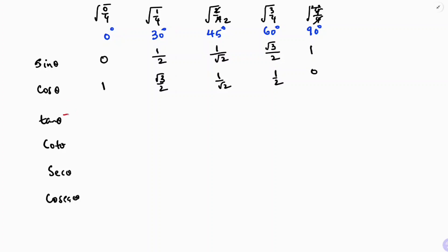Tan is sine divided by cos. So: 0 by 1 is 0; (1/2) divided by (root 3/2) gives 1 by root 3; (1/root 2) divided by (1/root 2) gives 1; (root 3/2) divided by (1/2) gives root 3; and 1 by 0 is not defined. So tan values are 0, 1/root 3, 1, root 3, and not defined.